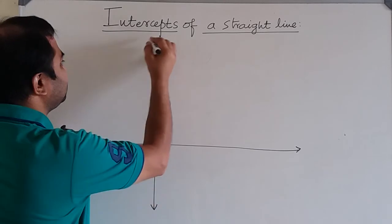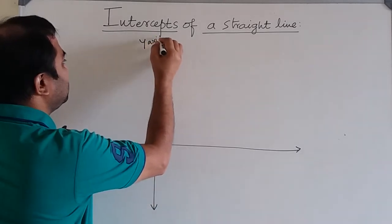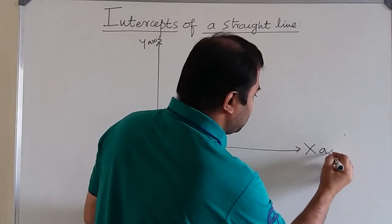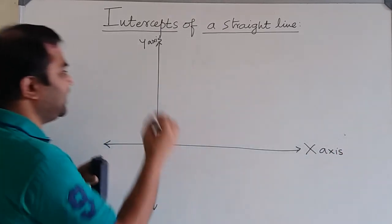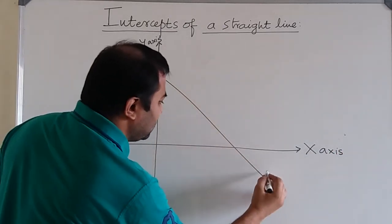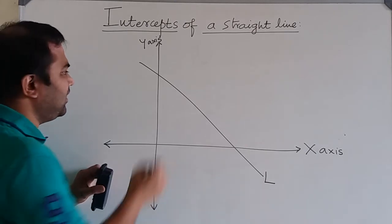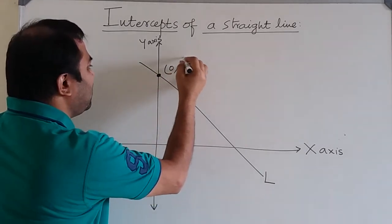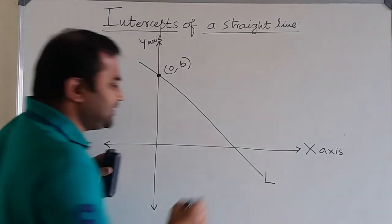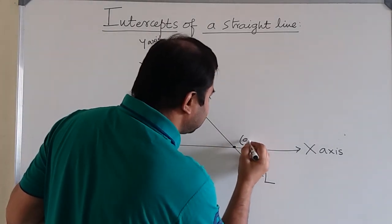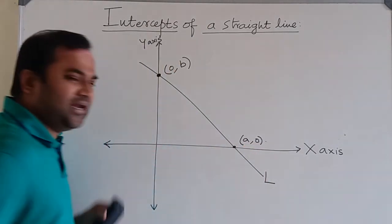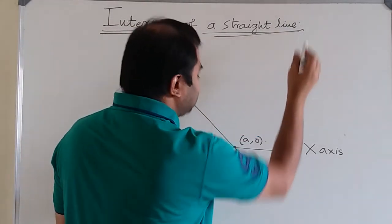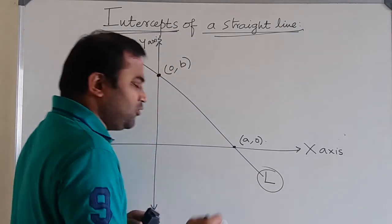Consider a straight line L which passes through the point (0, b) on the y-axis and the point (a, 0) on the x-axis. Now let us define what is meant by intercepts of a straight line.